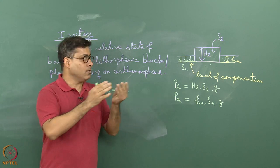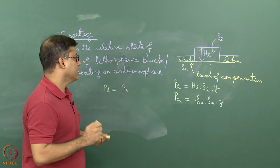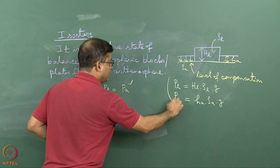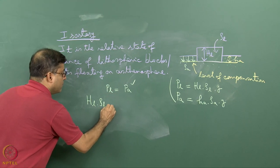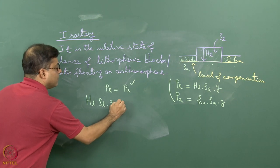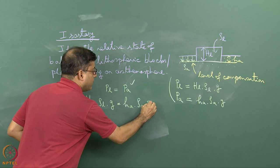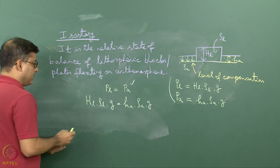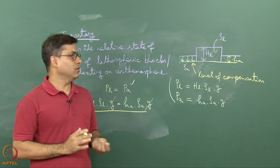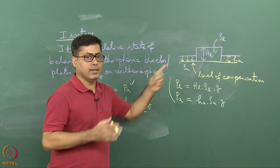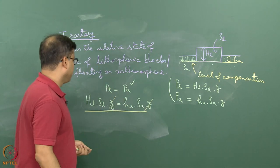In this condition the block neither sinks nor moves up — it is an isostatically stable condition. From these two equations we can write H_L × rho_L × G = h_A × rho_A × G. Naturally G cancels out, and we get an expression for the stable condition of the lithospheric block which neither sinks nor moves upward.